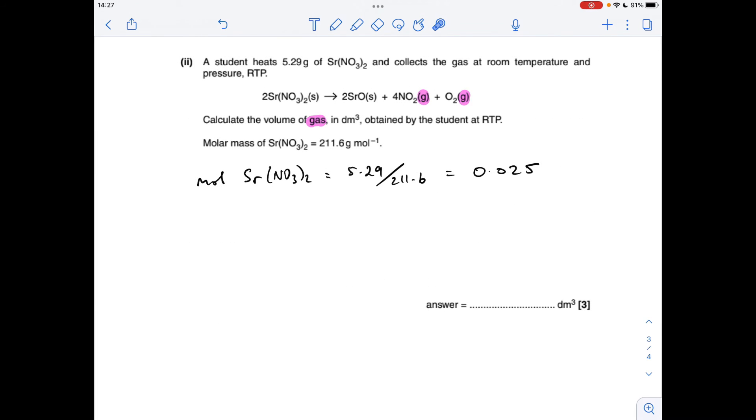And finally the calculation. So we've got to calculate the volume of gas in decimeters cubed obtained by the student at room temperature and pressure. So the first thing we work out is the moles of strontium nitrate, mass over Mr, 0.025. So the moles of gas formed at RTP is going to be 5/2, two and a half times the moles of strontium nitrate from this ratio. Two strontium nitrate make 4+1, so five moles of gas. So the moles of gas produced is that many. So to turn that into a volume at RTP we multiply by the molar gas volume in decimeters cubed which is 24. We get 1.50 decimeters cubed.